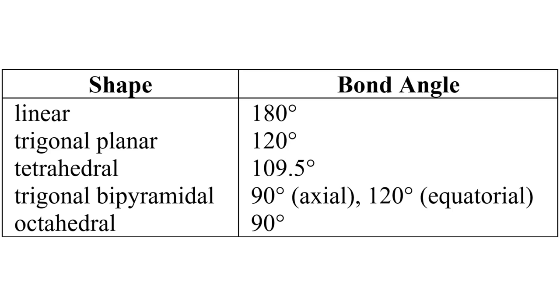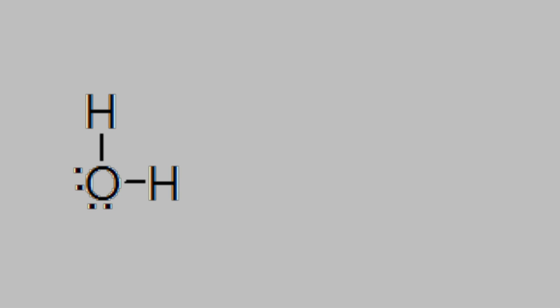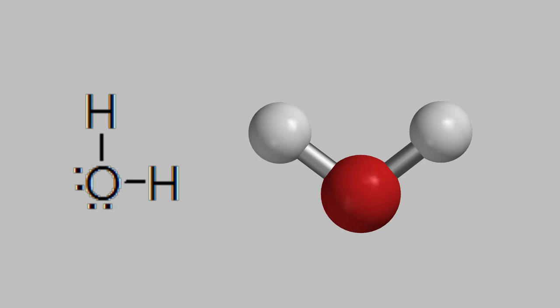But wait, when we began this video, I talked about water. But water doesn't have any of these shapes. Instead, water looks like this. It's kind of a V shape, and that's not one of the shapes we've mentioned so far. How do we explain that?